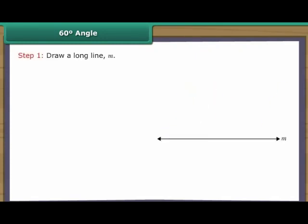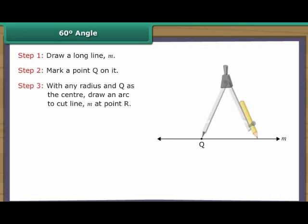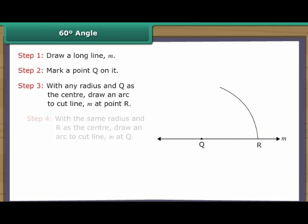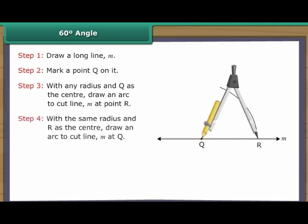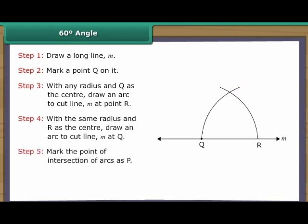Construction of 60 degree angle. Draw a long line M and mark a point Q on it. With any radius and Q as the centre, draw an arc to cut line M at point R. With the same radius and R as the centre, draw an arc. Mark the point of intersection of arcs as P. Join P to Q. Angle PQR is formed.